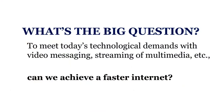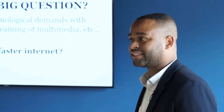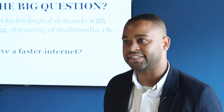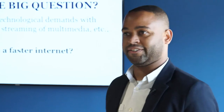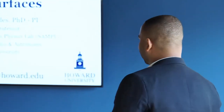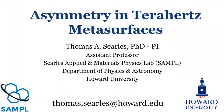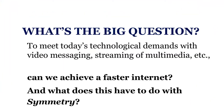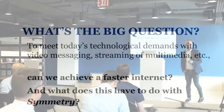So what's the bigger question that we're trying to address? Specifically, what we want to do is ask ourselves: can we achieve a faster internet? In today's society, we're constantly streaming, downloading, video messaging. And to reach this demand, we want to increase internet speed. But there's nothing about the internet in my title, right? And more specifically, what does achieving a faster internet have to do with symmetry, or some idea of symmetry?